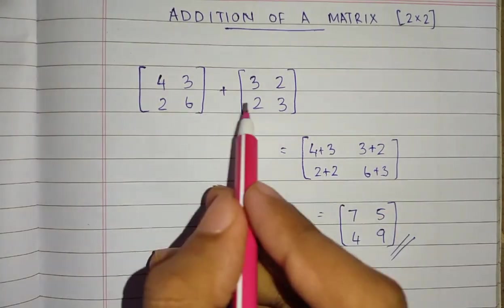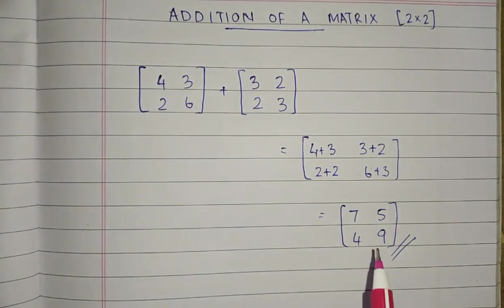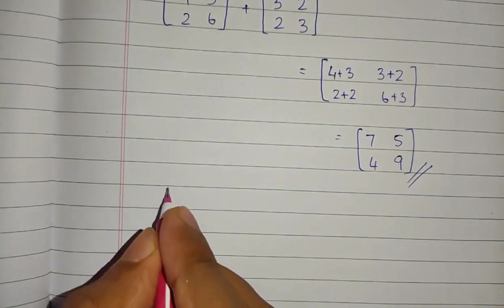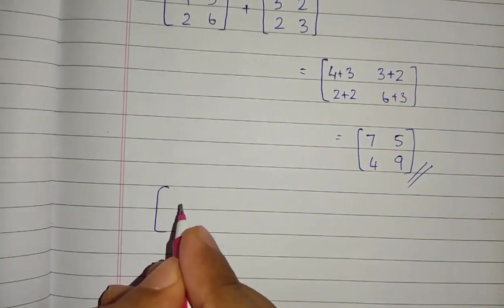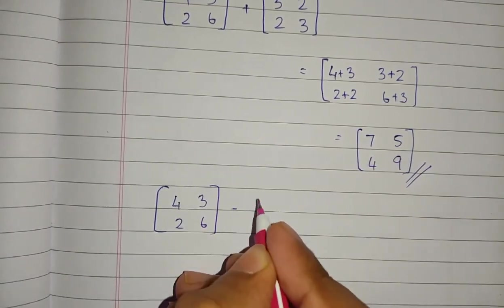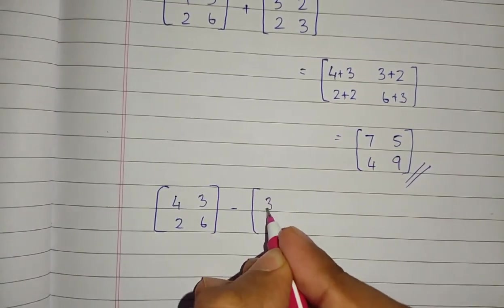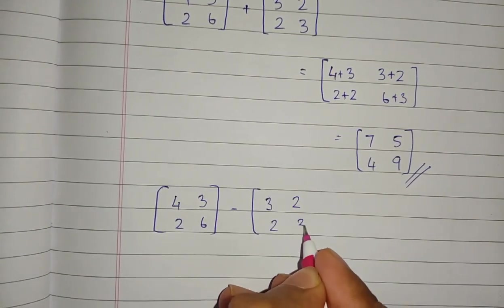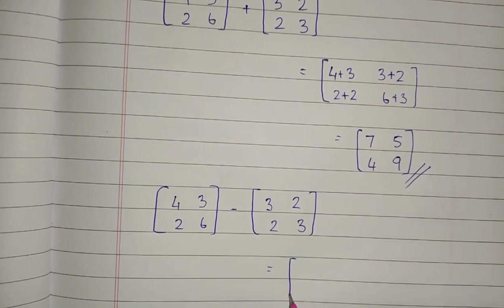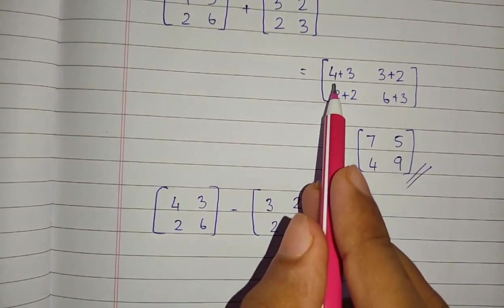Now let's do a subtraction of this matrix. We have 4, 3, 2, 6 minus 3, 2, 2, 3. This is the same method we used here.